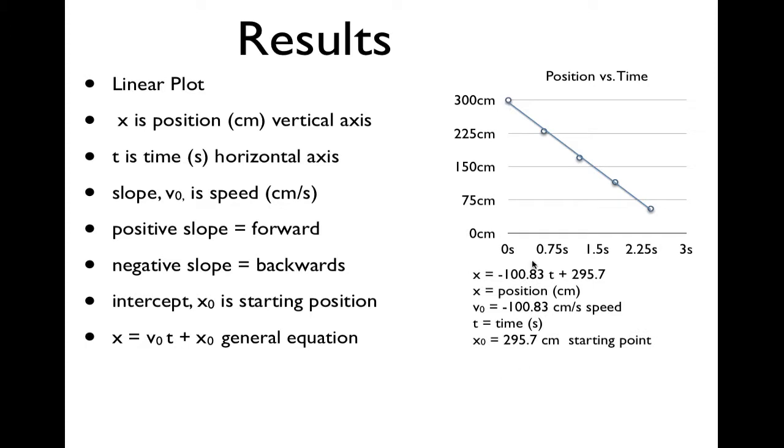And for this graph, for example, we'd have x = -100.83t + 295.7, where x would be the position in centimeters. We're saying that this thing's moving at about the rate of a meter per second. The time is measured in seconds, and we're saying we started at about 300 centimeters.